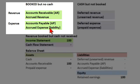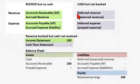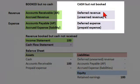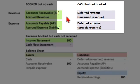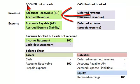On the left here in green, these are transactions where we have recognized or booked the revenue or expense, but the cash is not paid or received until the next period. And then over here, the opposite kinds of transaction — cash has been received or paid in this current period, but will not be recognized or incurred until the next period.